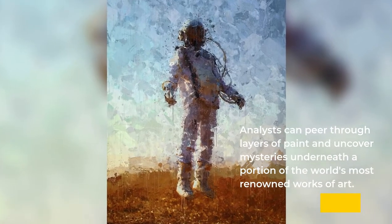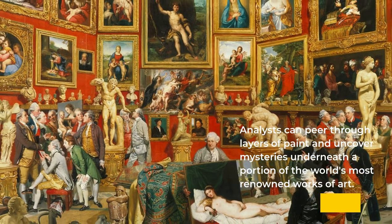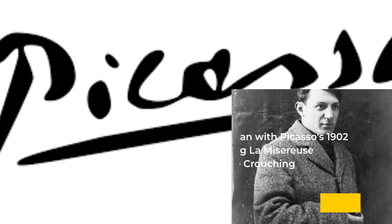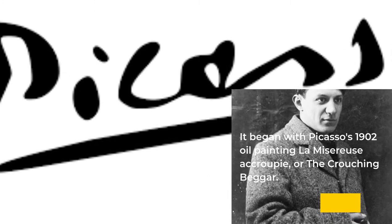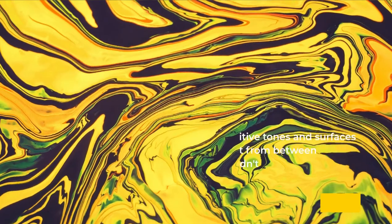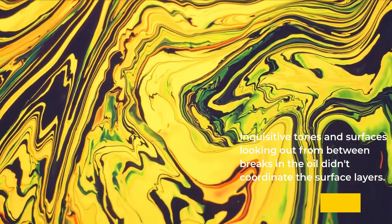Analysts can peer through layers of paint and reveal secrets beneath some of the world's most famous works of art. It started with Picasso's 1902 oil painting La Misereuse accroupie, or The Crouching Beggar. Curious tones and textures looking out from between cracks in the surface didn't match the top layers.